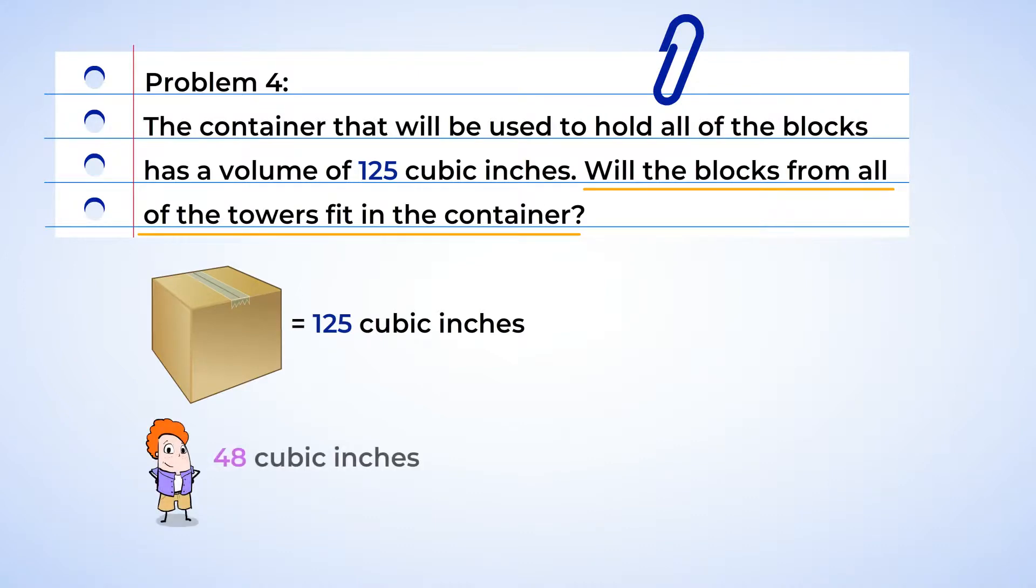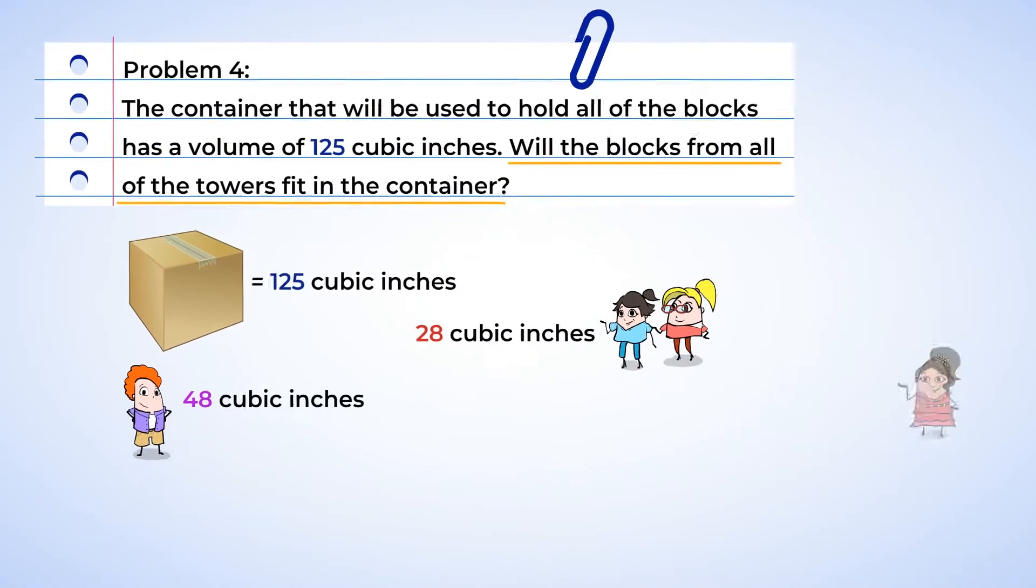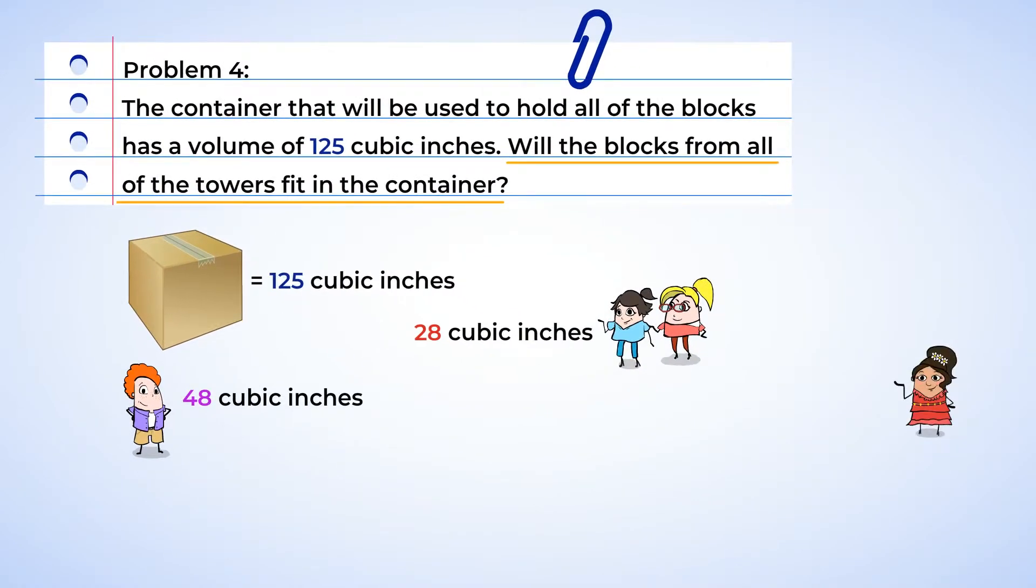Eric's tower is going to have a total of 48 cubic inches. Mia and Jenny have a total of 28 cubic inches. And Isabella will have a tower with a total volume of 68 cubic inches.